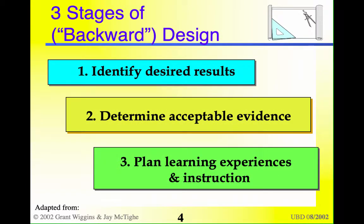There are three stages to Understanding by Design, and it's considered to be done in a backward design. First, you identify the desired results — what do you want the students to know and be able to do at the end of the learning experience? You determine what you have to do to get them there, and then you plan those learning experiences that will be most effective to get students to acquire the knowledge and skills at the level of mastery required.